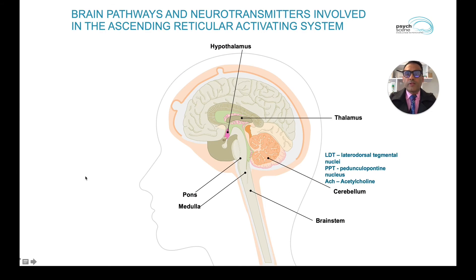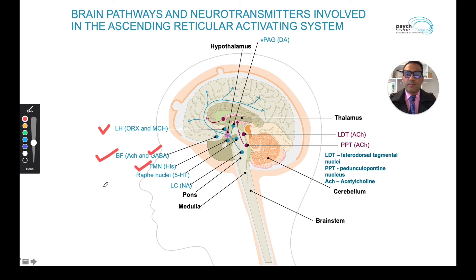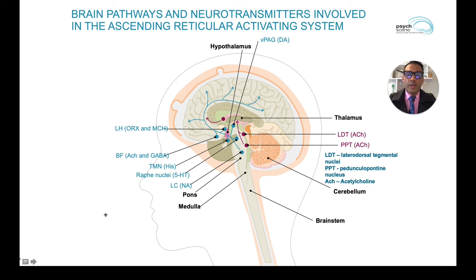When we think about the reticular activating system, there are a range of neurotransmitters involved beyond just melatonin and adenosine. These include orexin, acetylcholine, GABA — which plays an important role — and histamine, which is why many antihistamines are sedating. Noradrenaline plays an important role, and excess noradrenaline due to trauma can result in nightmares or vivid dreams. Acetylcholine also plays an important part, showing a huge interplay between the various neurotransmitters when it comes to sleep.